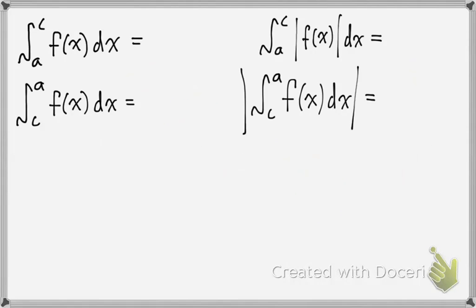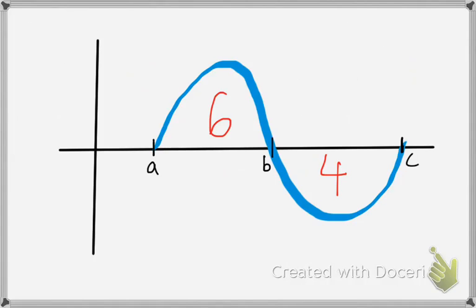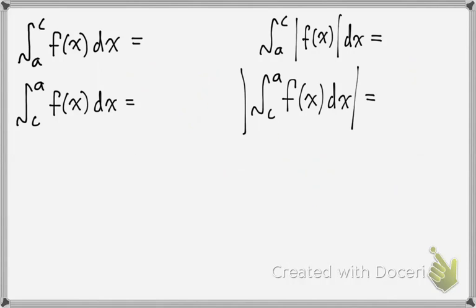The integral from a to c of f(x) dx — what would that be? So a to c, the whole thing so far. What would the area be? Well, this area is positive 6, and this would technically be negative because it's below the x-axis. So what do we do? It's 6 minus 4, so 6 minus 4 equals 2. So 2 is our answer for that one.